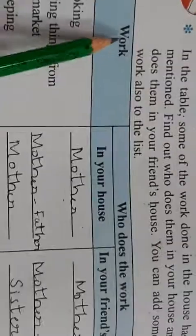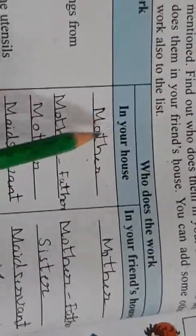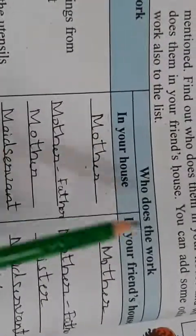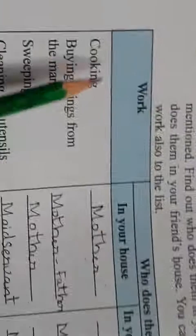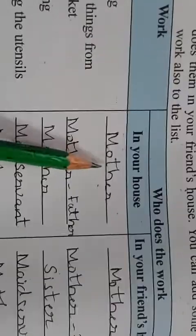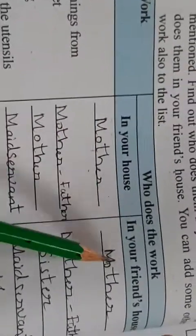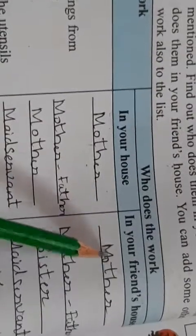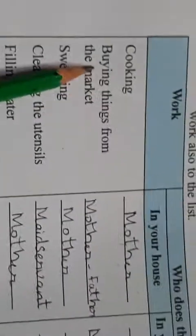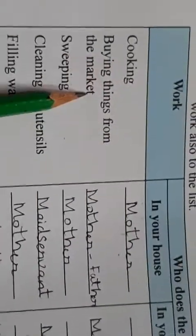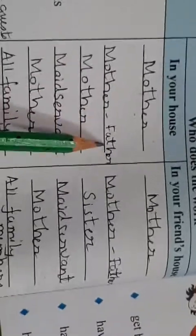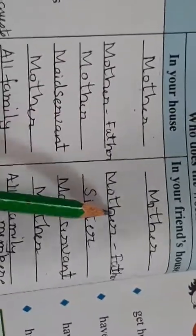Now here you can see: Work — yani kaam. Who does the work in your house and in your friend's house? Cooking — aapke ghar mein kaun karta hai? Mother. In your friend's house, also mother. Buy things from the market — baazar mein se cheez laana — yahan pe mummy aur papa dono, yahan pe bhi mummy aur papa dono jaate hai, normally.